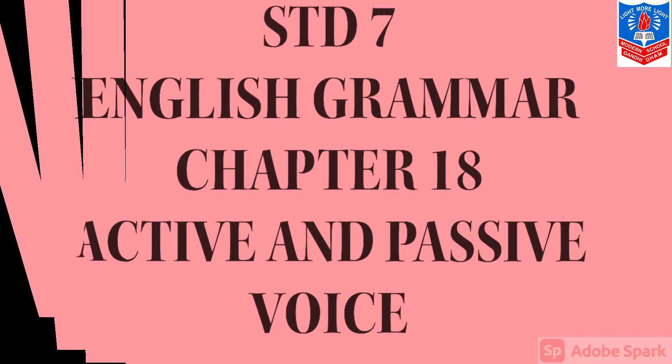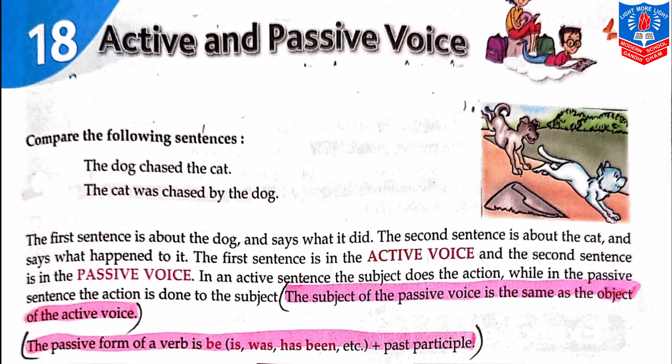So let us understand in more detail. Compare the following sentences. The first one is: the dog chased the cat. As you can see in the picture, the dog is running after the cat. In the second one, we are changing it into: the cat was chased by the dog.